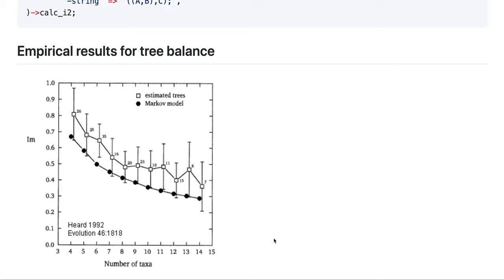What matters here is the following. So based on these pure birth and birth-death processes, we can generate what our expectation is for the average imbalance given some number of tips. For example, here under a Markov model, which is basically a different word for a Yule model. So under the Markov model, this is the expectation for the average imbalance as your trees get bigger.